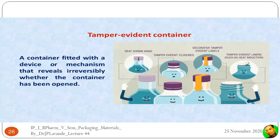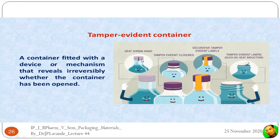A tamper evident container ensures that the product has not been broken or opened. Once it is broken or opened, it cannot be resealed, so the person, patient, or observer can clearly see that it has been tampered with. There are different kinds of tamper evident containers. One is a heat shrink band, applied with heat, which can only be removed by tearing it off — once torn, it confirms tampering.